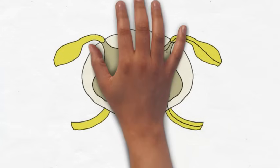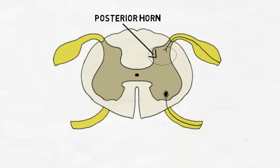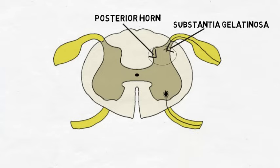The gray matter is divided into three regions. The posterior horn contains interneurons that make connections within the spinal cord and neurons that enter ascending pathways carrying sensory information to the brain. There is a section of the posterior horn called the substantia gelatinosa that contains neurons that specifically carry pain and temperature sensations to the brain.